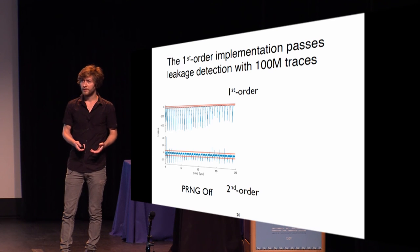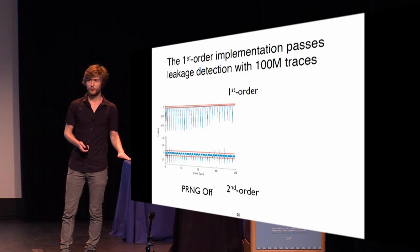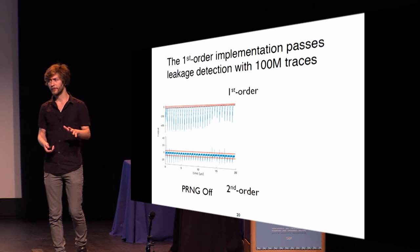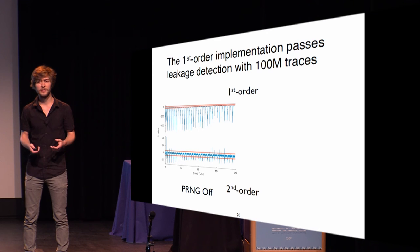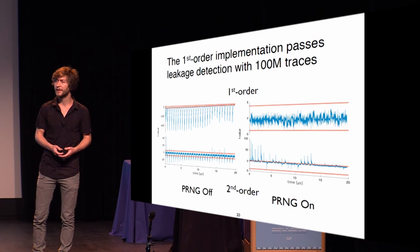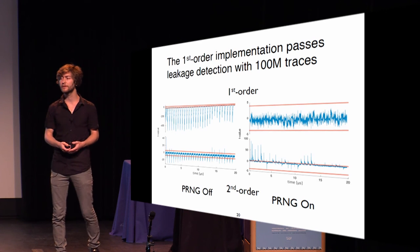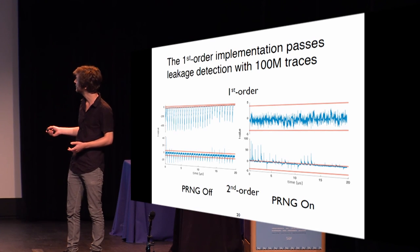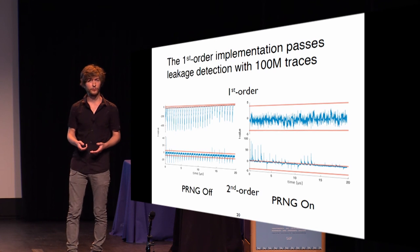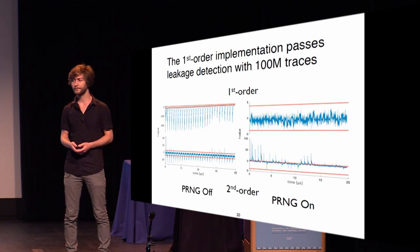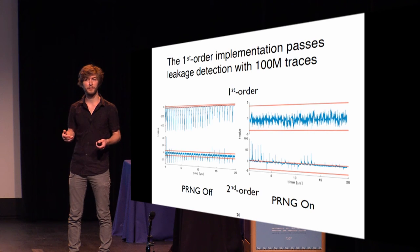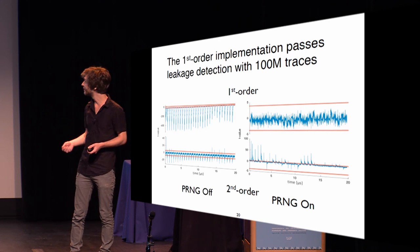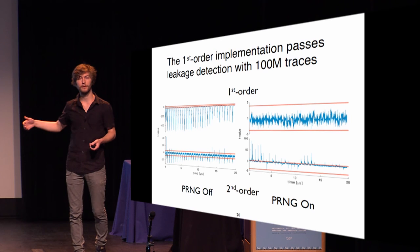If we now turn on the random number generator — and that's the only thing we do — all increase in side-channel resistance comes directly from our proper masking scheme. And that's what we get for our first-order implementation: with 100 million traces we see no leakage; everything falls nicely between our confidence interval. Since we only use D plus one shares, which is the theoretical minimum, we do observe high leakages in the second order.